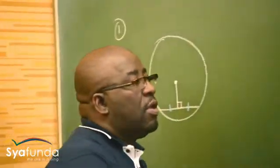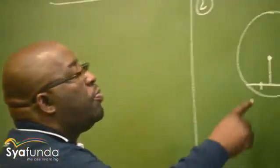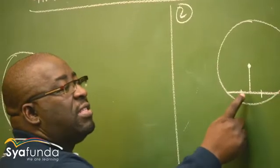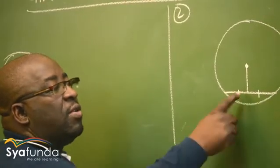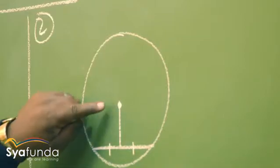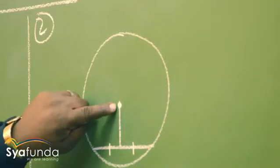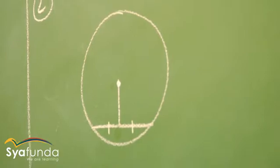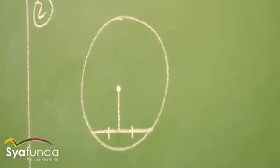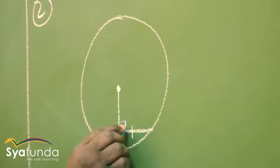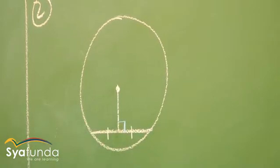This next theorem: since this distance from there to here is the same as this distance from here to here, so this is the midpoint. A line that is drawn from the center of a circle to the midpoint of a chord is perpendicular to the chord. So what we prove there is that this line is perpendicular to the chord.